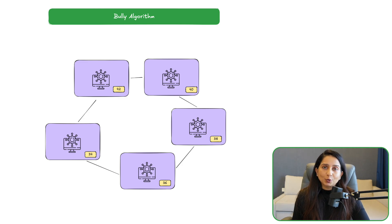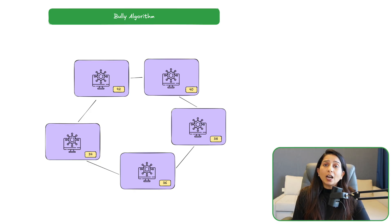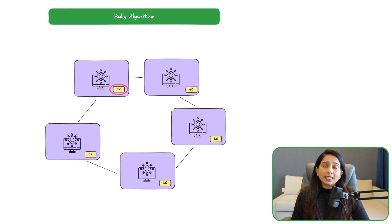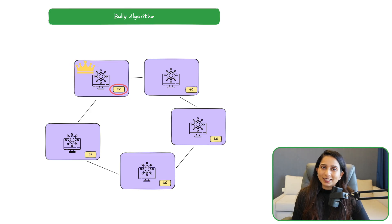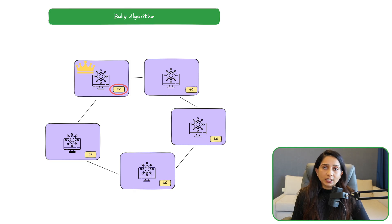The Bully Algorithm is the simplest leader election algorithm. As the name suggests, a computer basically bullies its way to become a leader — just like a bully has some extra power, like being physically stronger, a computer shows off its power by having the highest ID. A computer with the highest ID becomes the leader. That is the core of the Bully Algorithm, but let's dig into the details.